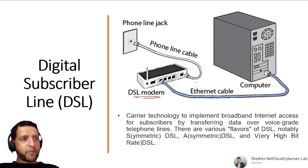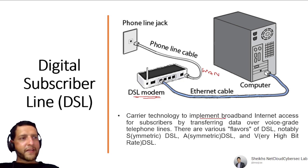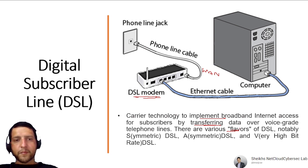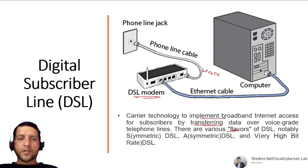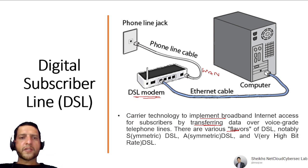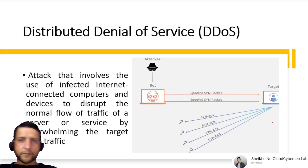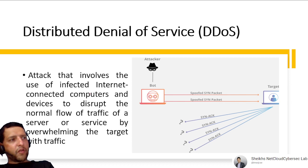DSL (Digital Subscriber Line) is a carrier technology for broadband internet access that transfers data over voice-grade telephone lines. It is similar to a cable modem setup. Types include symmetric DSL (same upload and download speed) and asymmetric DSL — where download speed is typically greater than upload speed, since users download more than they upload.